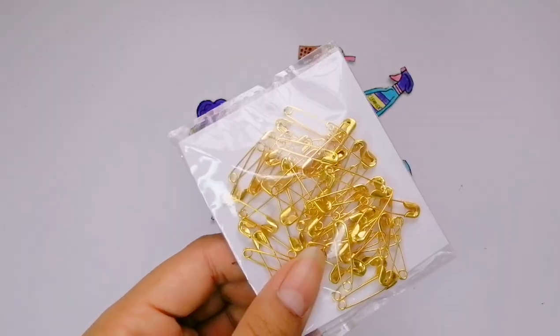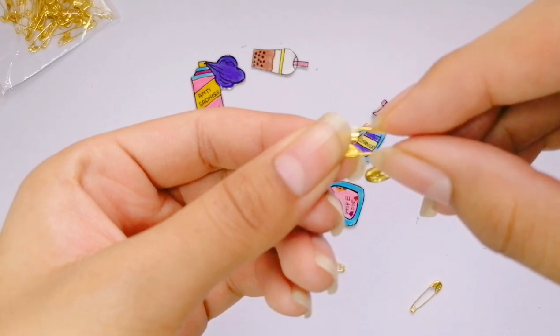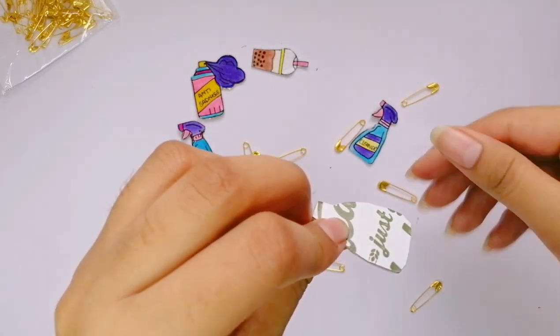Take some safety pins, these are small safety pins, and we have to just glue them onto the pins that we made. You can see that we are using a hot glue gun.